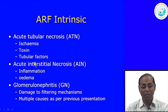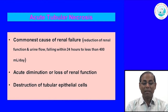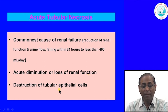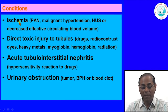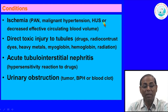Acute interstitial injury involves interstitial inflammation and edema, and glomerulonephritis has been discussed earlier. Acute tubular necrosis is the common cause of renal failure, with acute diminution or loss of renal function resulting from destruction or dysfunction of tubular epithelial cells. Ischemia causing ATN may be due to vascular diseases like polyarteritis nodosa, malignant hypertension, or hemolytic uremic syndrome, or a decrease in effective circulating blood volume inside the kidney.